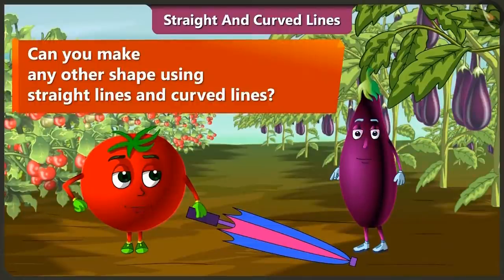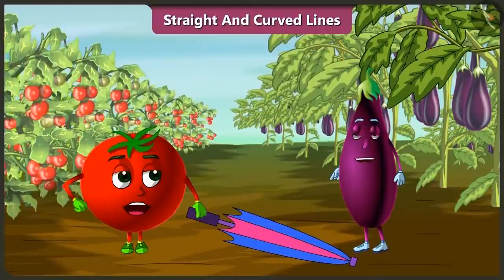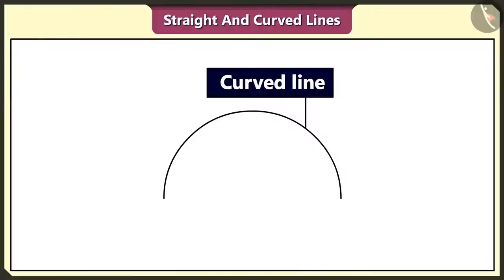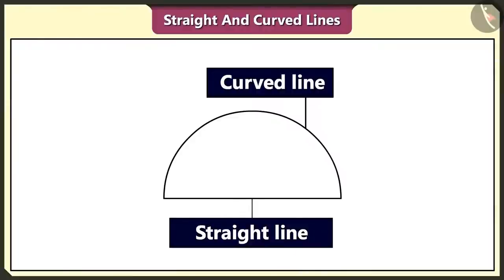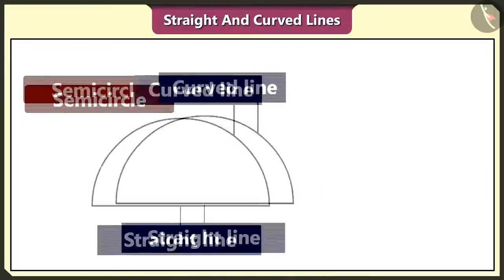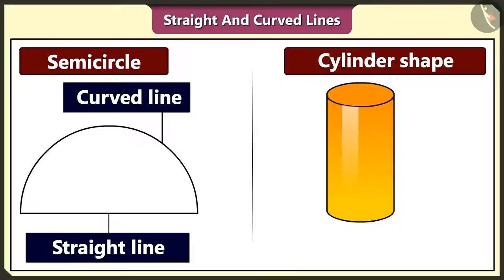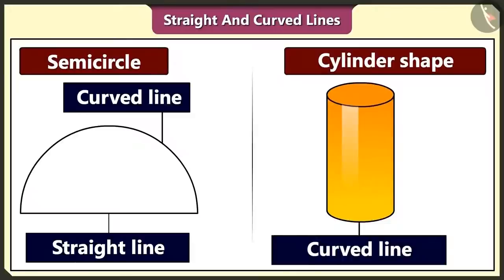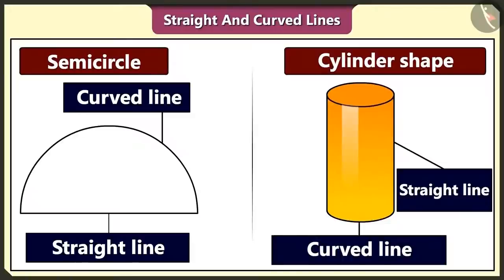Come on, think Bingu. Yes, using a curved line and a straight line, we can make a semicircle like this. And yes, a cylinder shape is also made using curved and straight lines.